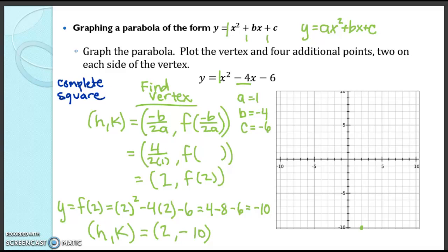Now how do we plot 2 points on the left and right? Well, we can do that with a table. We just take x values and plug it in. When we plugged in 2, we got negative 10. So let's plug in a point to the right. Let's plug in 3. When we plug in 3, we'll get negative 9. So we have a point at (3, negative 9). When we plug in 4, we'll get negative 6. So we'll have a point at (4, negative 6).